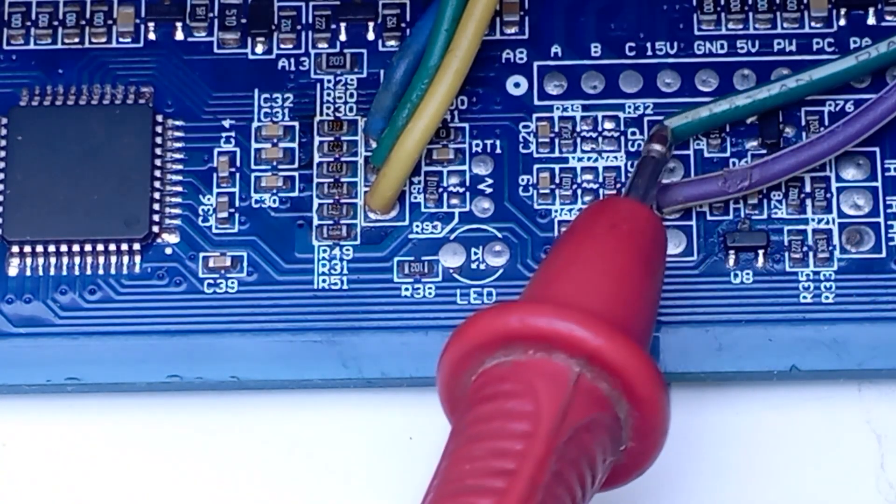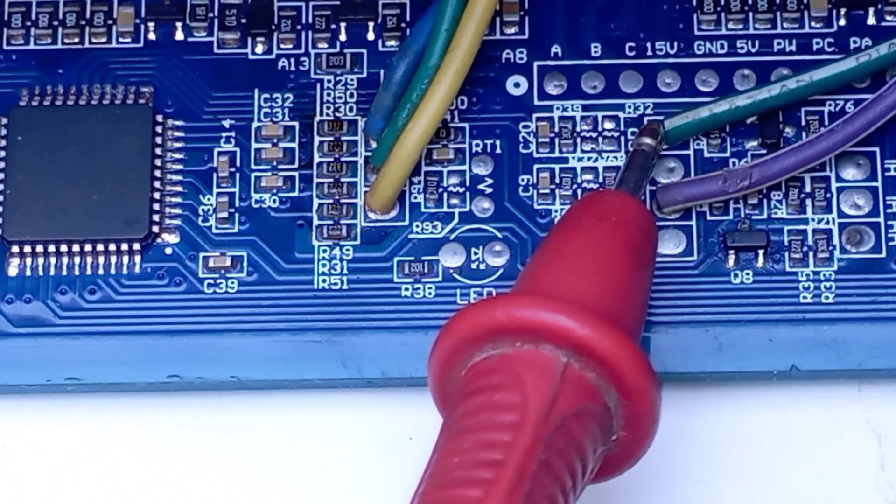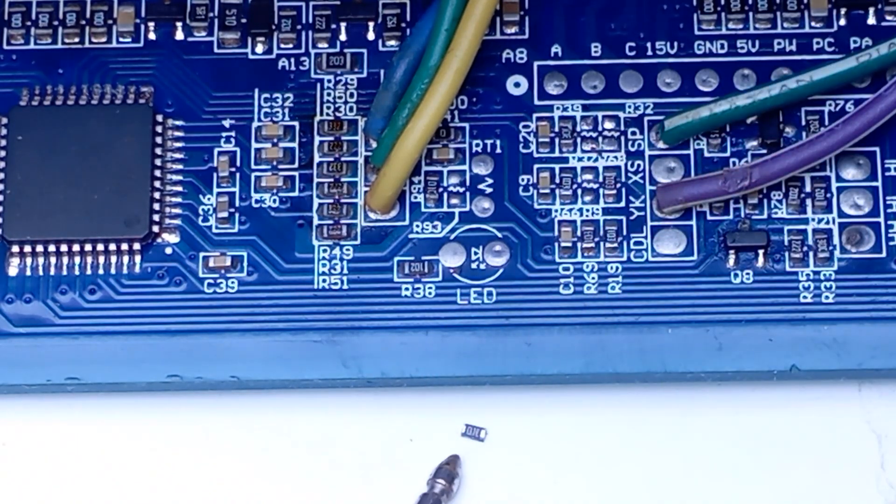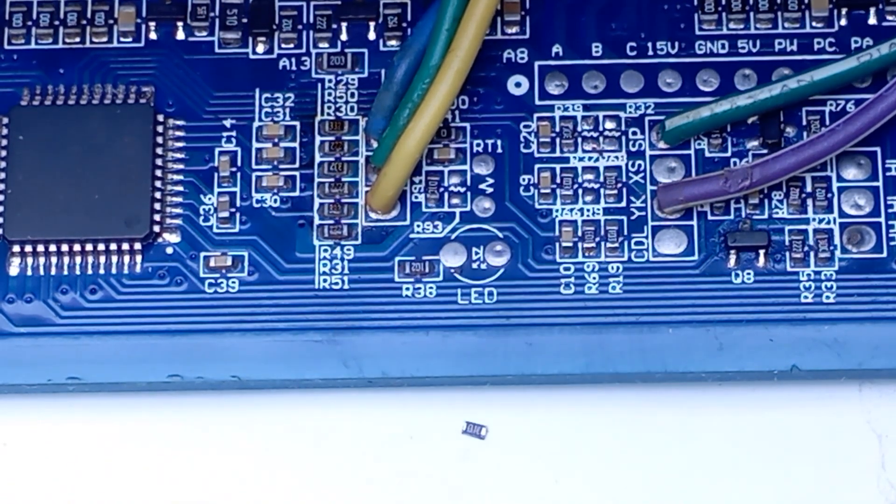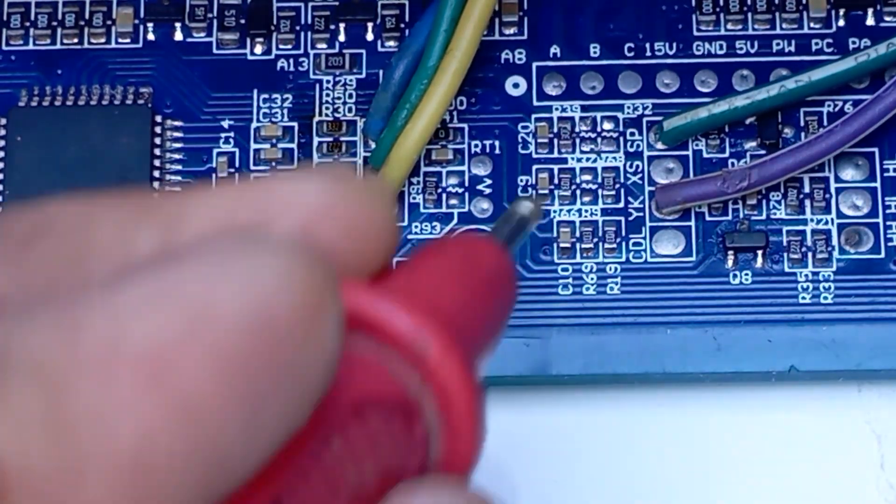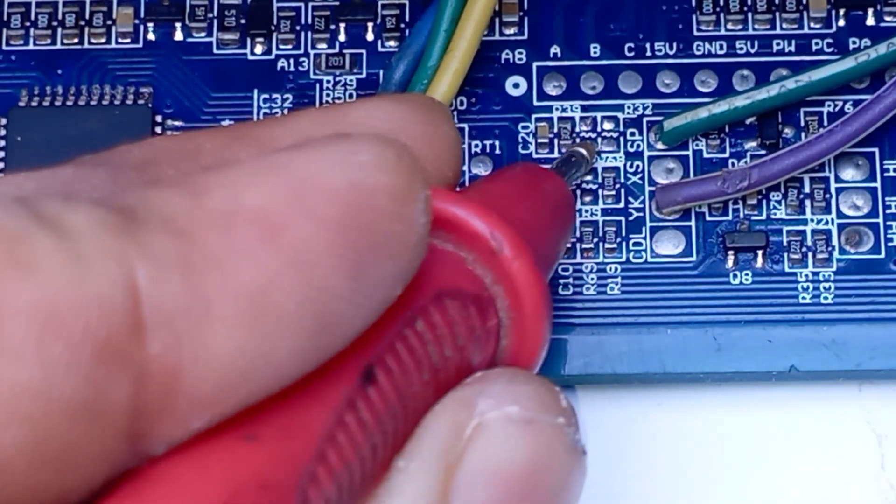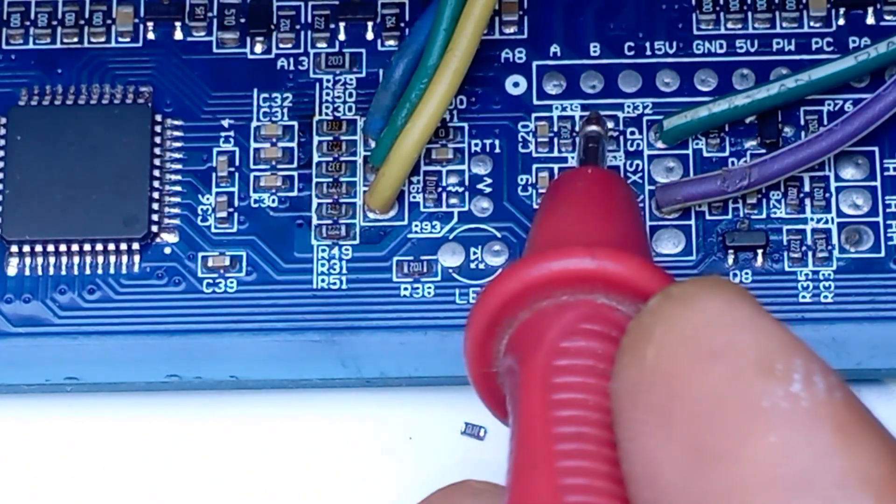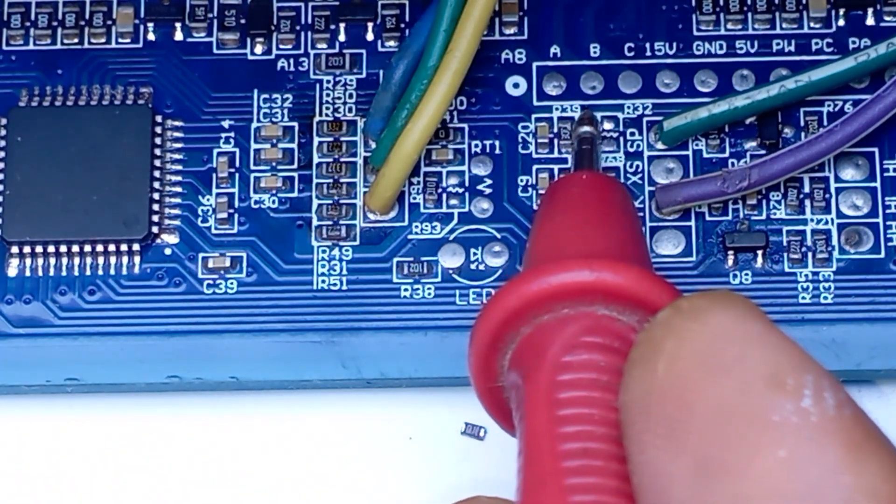In this controller, here we have the green Hall sensor's output wire and the 10k resistor I have already removed from here. Just like the previous controller, this green wire should be connected with one side of the resistor, and the other side is directly connected with the microcontroller.